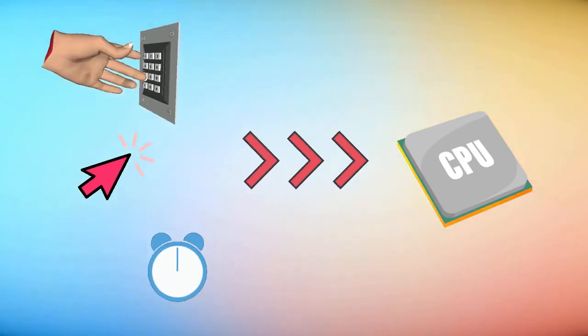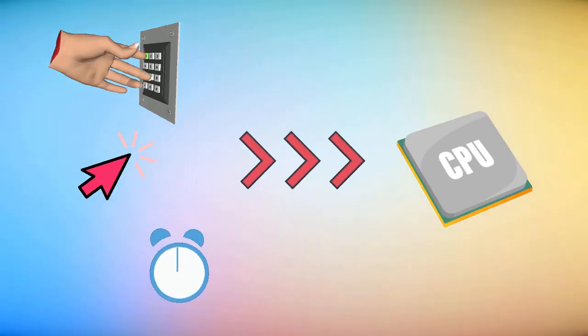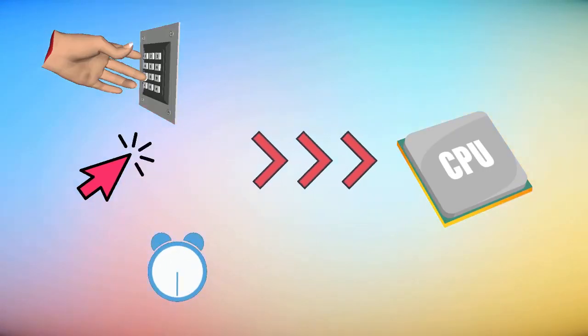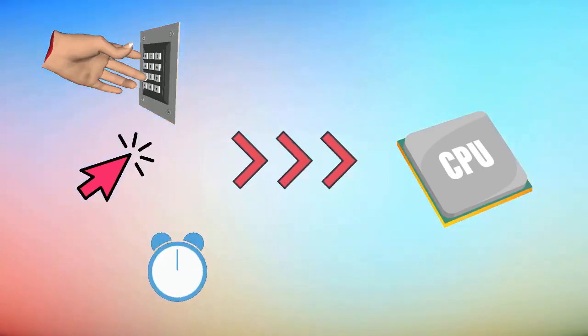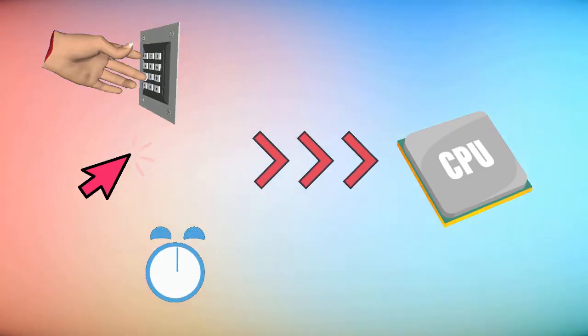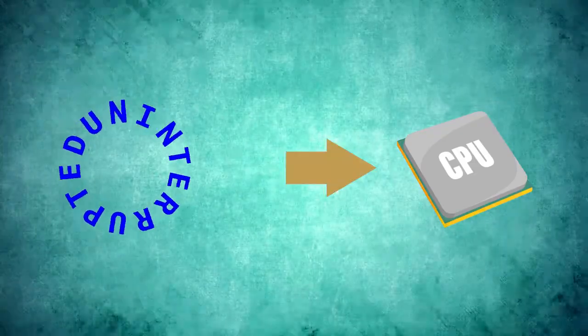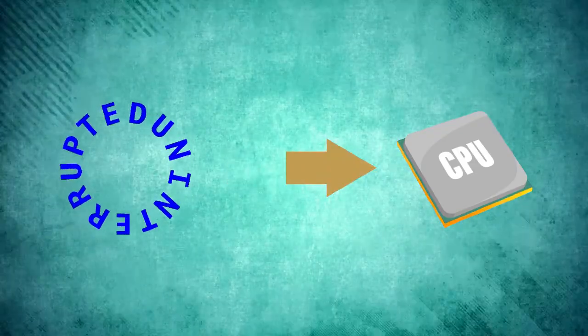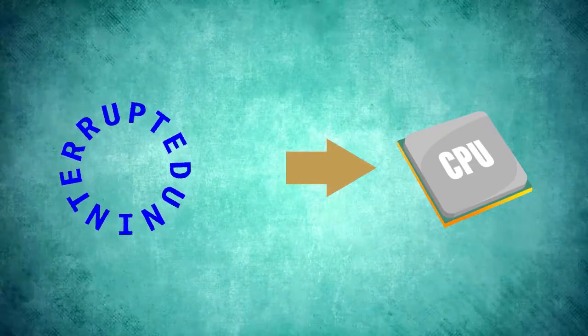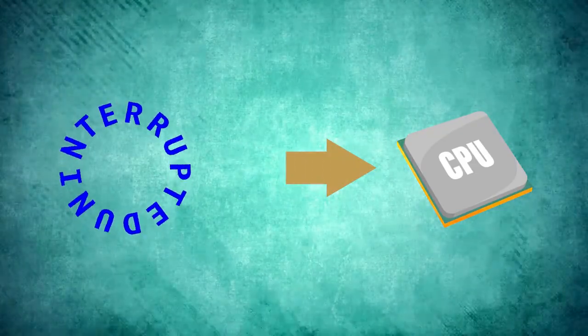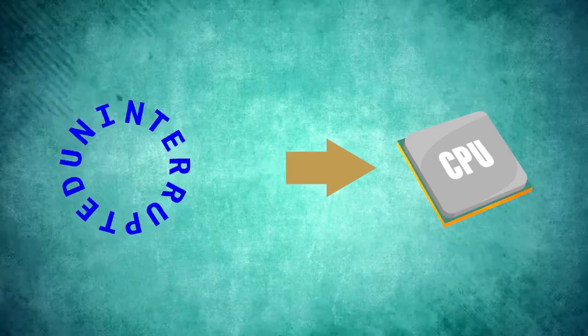Now, what actually happens during this time? First of all, external hardware interrupts are asynchronous, meaning that you cannot predict when they occur.